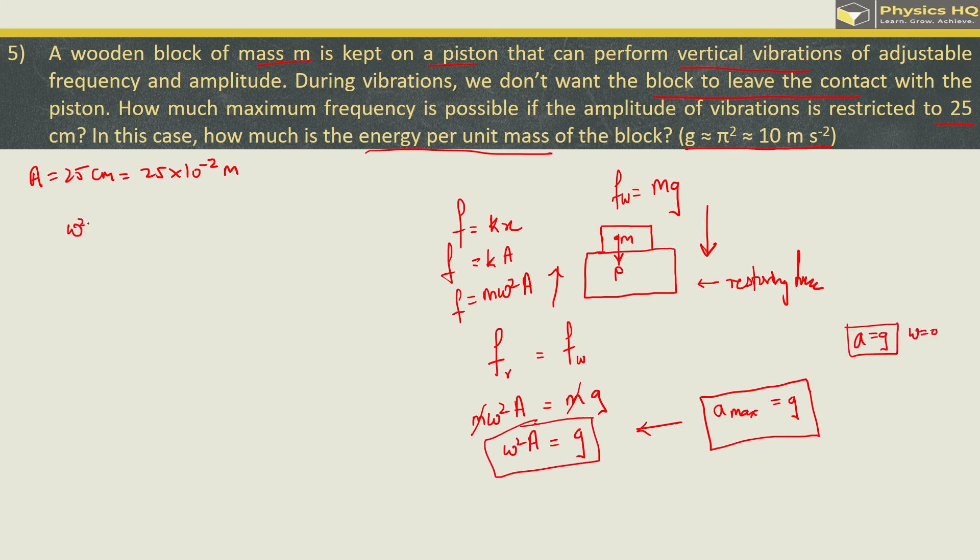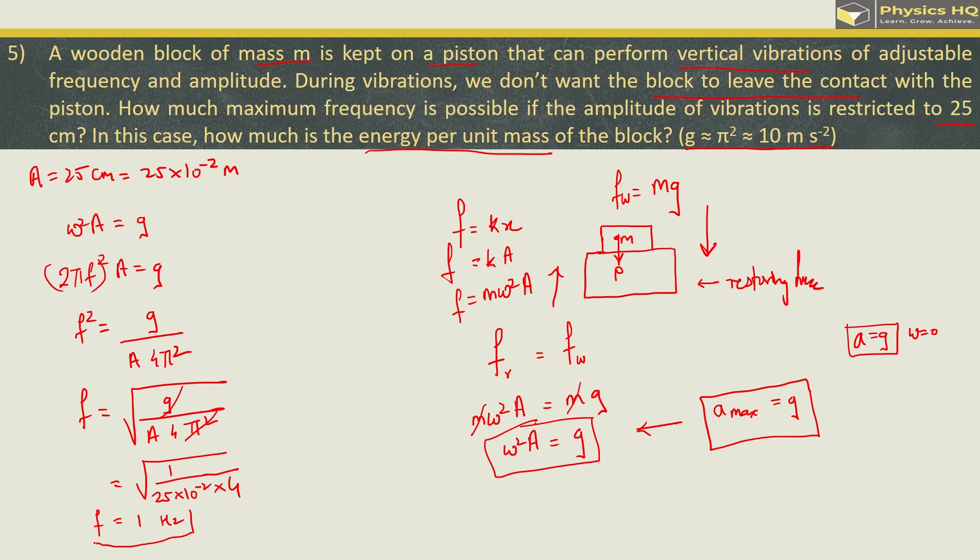So let us start solving by using this. Omega squared a should be equal to g. Omega can be written as 2 pi f squared a equal to g. Or you can have f squared is equal to g upon A times 4 pi squared. Or we can find frequency as root of g upon A into 4 pi squared. Pi squared and g are approximately 10 so we can cancel this. So this is root of 1 upon A is 25 into 10 raise to minus 2 into 4. 25 into 4 will be 100 or 10 raise to minus 2 into 100 will be 1. So we are left with frequency equal to root of 1 which is 1 Hertz. So the maximum frequency we get here is 1 Hertz.